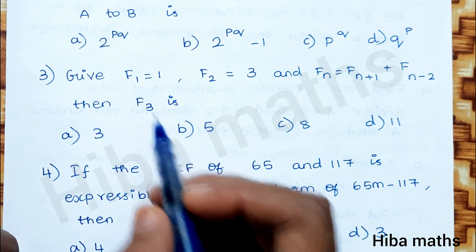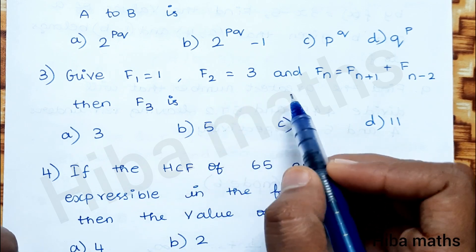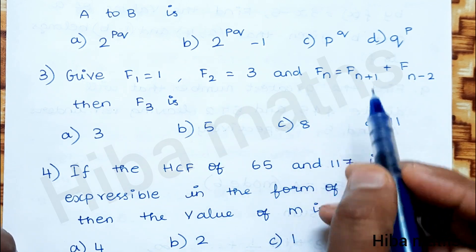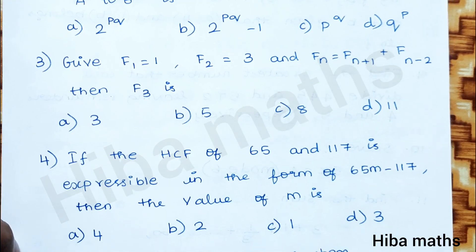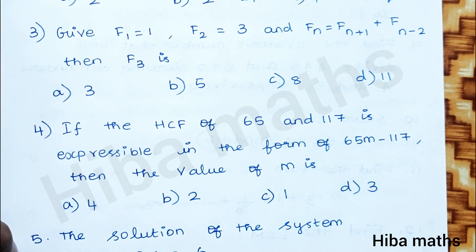Third question: Given f(1) = 1, f(2) = 3, and the general form f(n). Then find n — substitute n = 3 into the general form to get the answer.